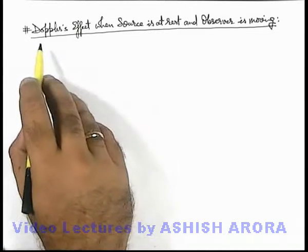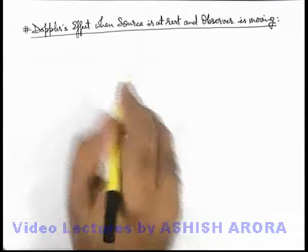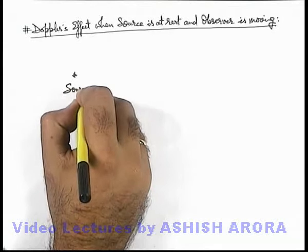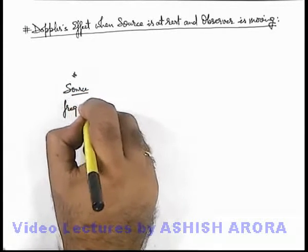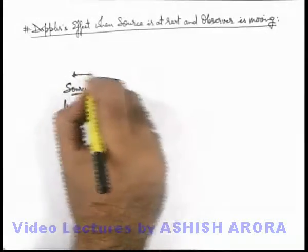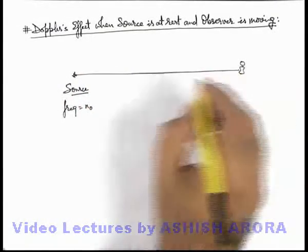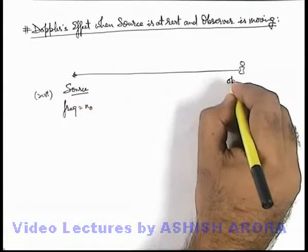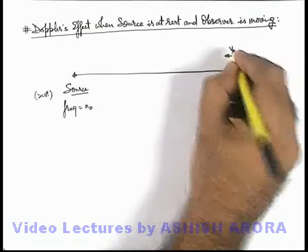Let's study the analysis of Doppler's effect when source is at rest and observer is moving. Say if this is a sound source which is having its frequency n₀, and in front of it there is an observer. Source is initially given to be at rest, and this observer is moving towards the source with a speed v₀.